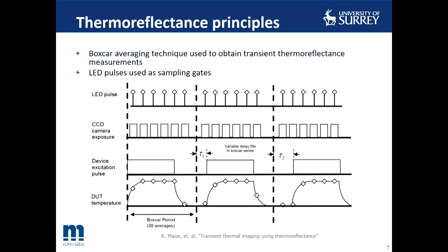In order to enable transient thermoreflectance, a boxcar averaging scheme is employed, as shown in this figure. We have LED pulses synchronized to the charge coupled device camera shutter and the device excitation pulse. By changing the delay between the device excitation pulse and the LED, the thermal transient can be sampled. The pulse width essentially acts as a sampling gate for the measurement system, and the minimum LED pulse width determines the temporal resolution of the system. For our measurements, we have a system that can go down to 50 nanoseconds temporal resolution.